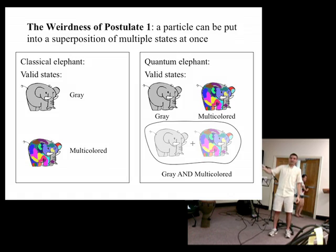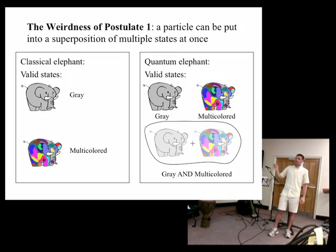Second implication. Imagine I have a classical elephant and it has two possible states. It can be gray or it can be multicolored. Now if I have a quantum mechanical elephant, it can also be in the state gray or in the state multicolored. But quantum particles can be in what's called a superposition state. It can be in two states at the same time. It can be both gray and multicolored at the same time. Now what does that even mean? No one knows! That's what quantum mechanics tells us. It's a very unintuitive result.